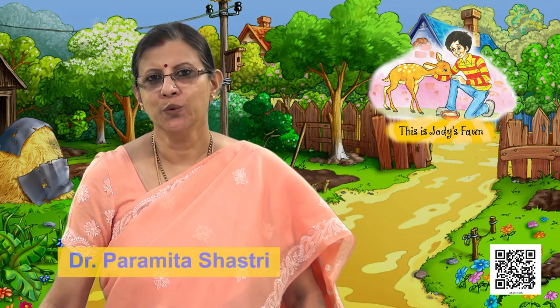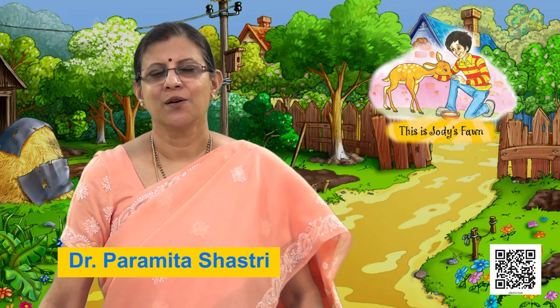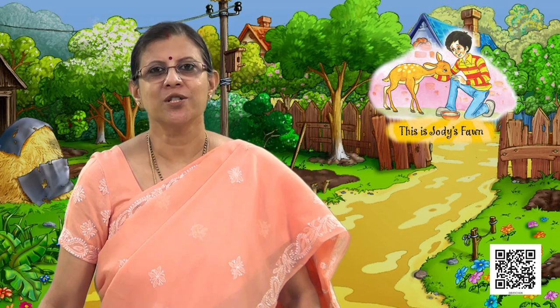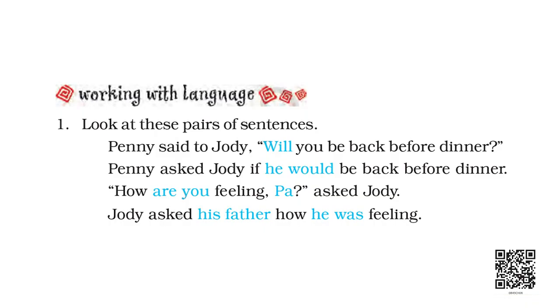Welcome students of class 8. Today we will do part 2 of unit 6 of your textbook Honeydew. The lesson is 'This is Jody's Fawn.' In this part we will do some of the exercises given in your textbook under 'Working with Language,' and then read the poem 'The Duck and the Kangaroo.' Let's go to the section 'Working with Language' on page 94.